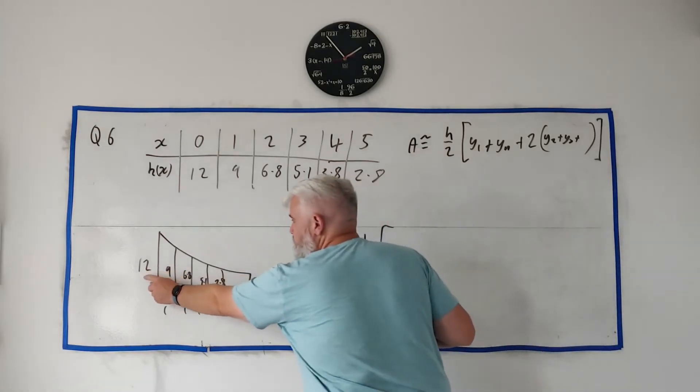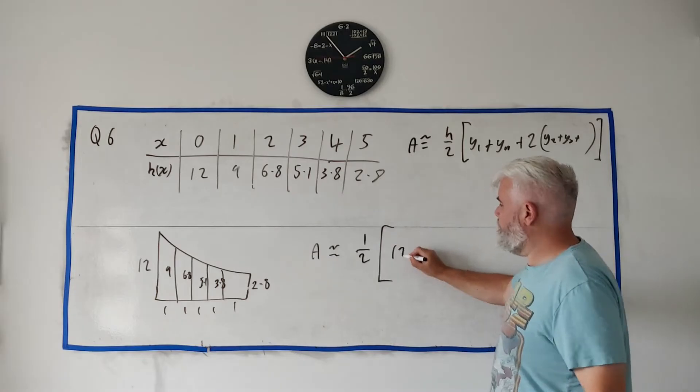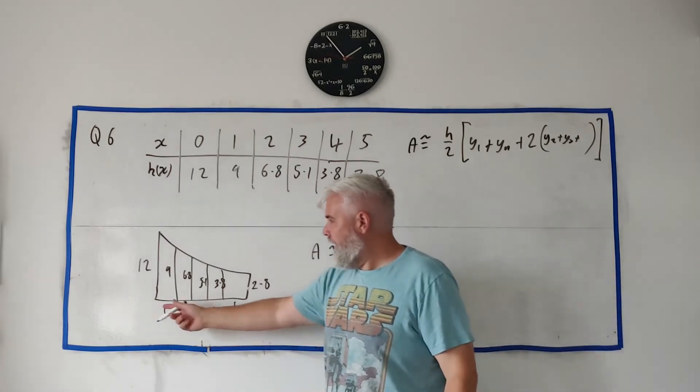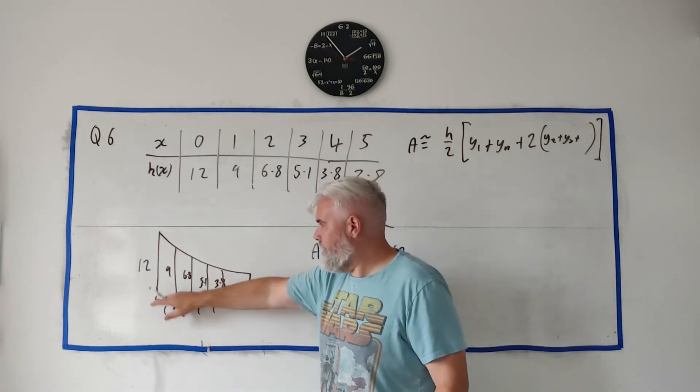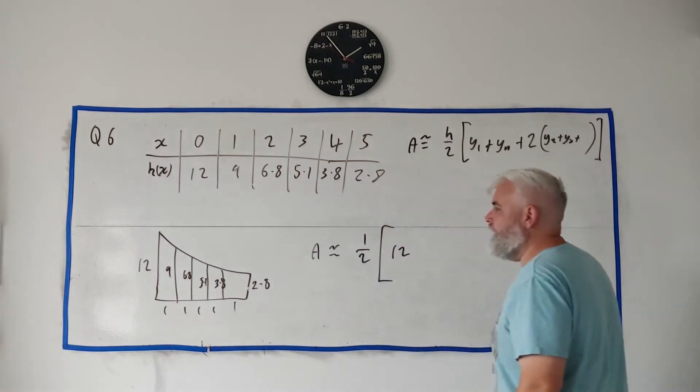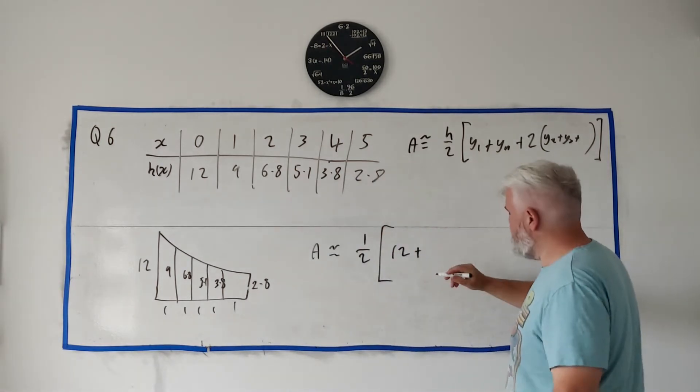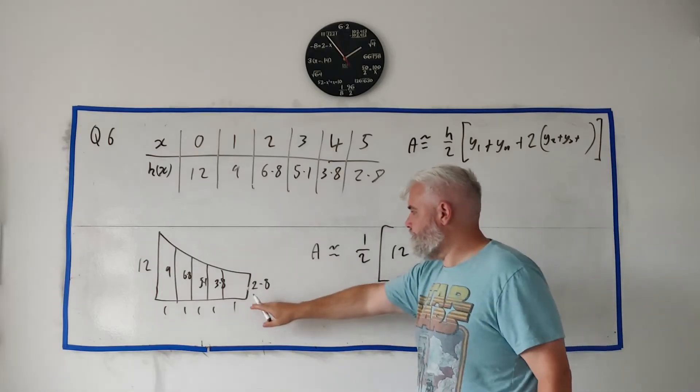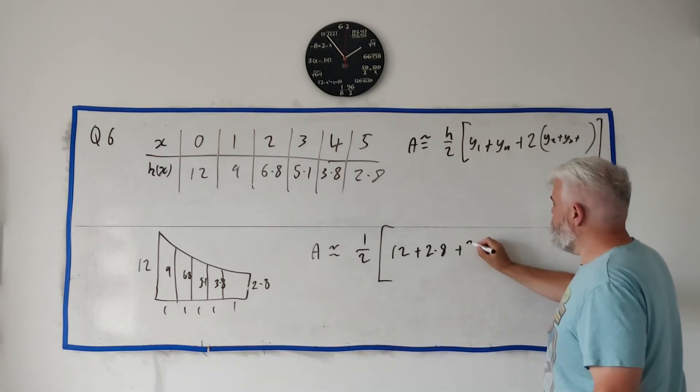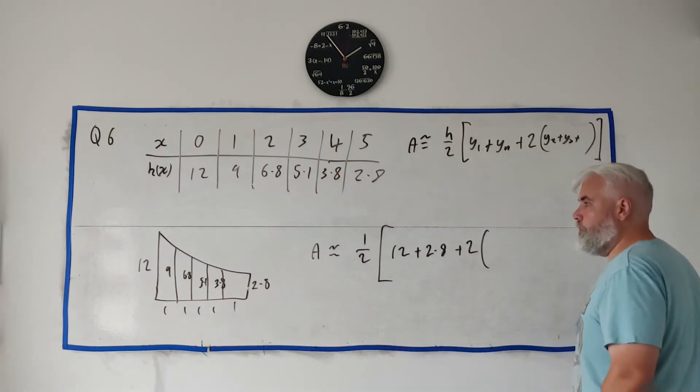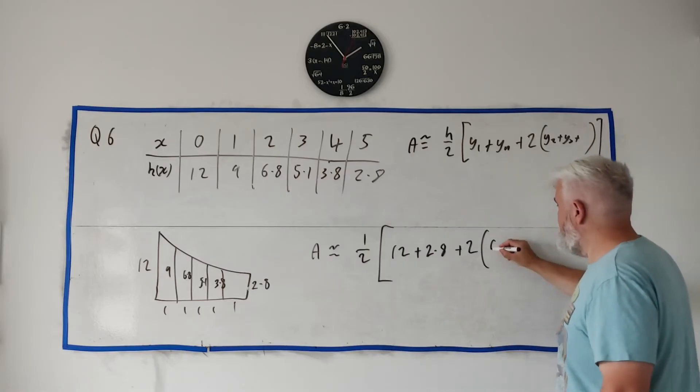The first number is 12. Be careful, the first number is often 0 when it starts down at the bottom. This doesn't, it starts at the top here. The last number, again sometimes 0, watch out for that. This time it's 2.8. And then plus two times all the other numbers added together.